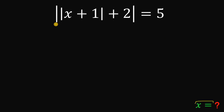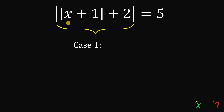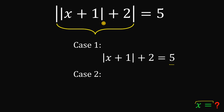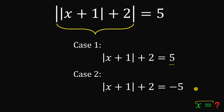Now let's start with the outside absolute value. From here, we have two possible cases. The first case is that the number inside is simply equal to positive 5. Or case number 2, the number inside the absolute value is equal to negative 5, because if we take the absolute value of negative 5, we still get positive 5 — it is just the distance of negative 5 to 0.